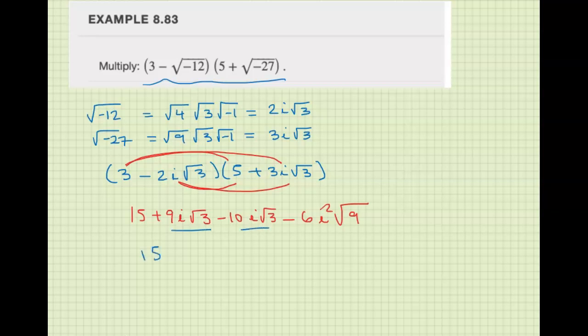We get 15 minus i square root of 3 minus 6. i squared means negative 1. And square root of 9 means 3.